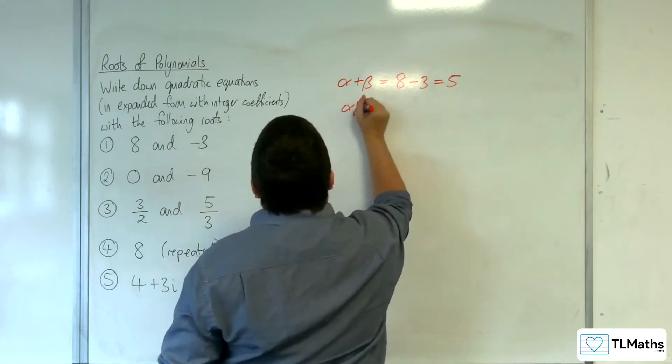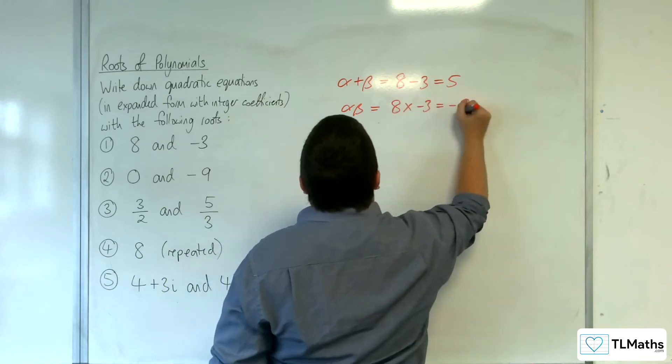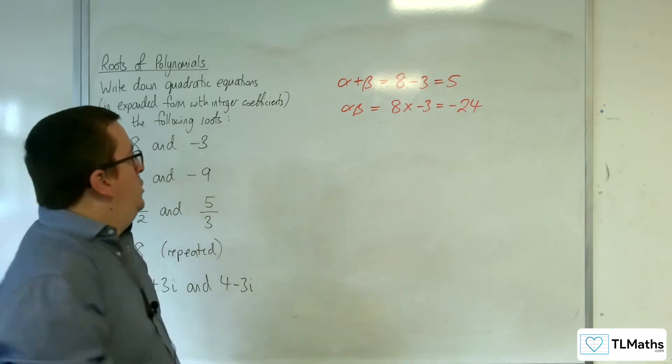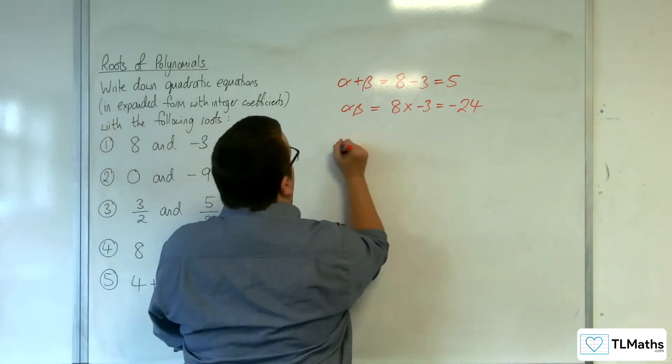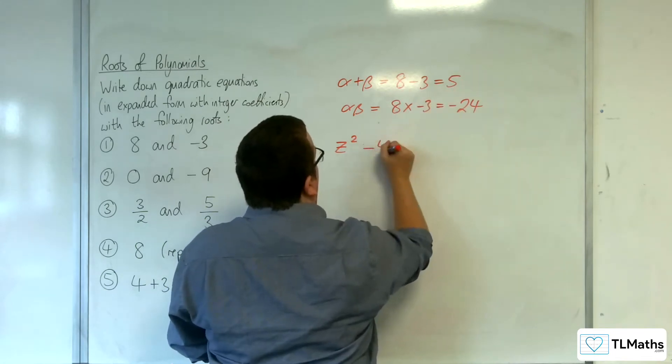And alpha beta is the product of the roots, so 8 times minus 3, so minus 24. So the quadratic equation would be z squared, take away the sum of the roots, so take away 5z.